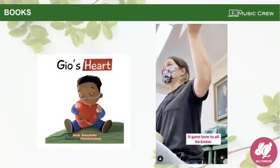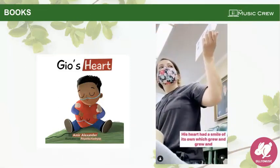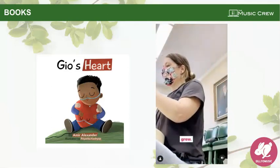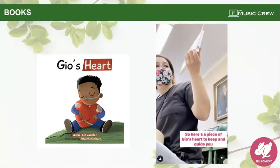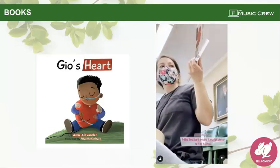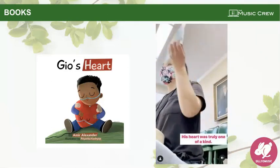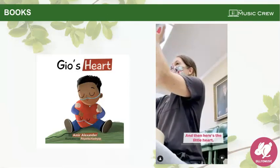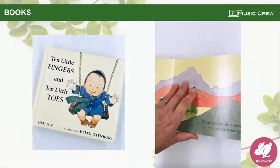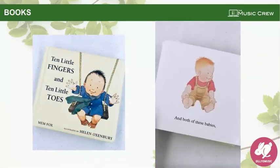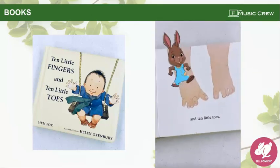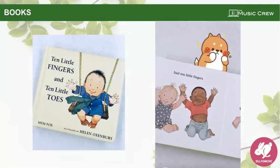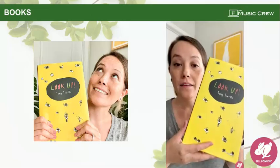Here are examples of me using the books — just a heads up, Ten Little Fingers and Ten Little Toes is playing at twice the normal speed so it's a little fast. 'Geo's heart was special, it gave love to all he knew. His heart had a smile of its own which grew and grew and grew.' 'There was one little baby who was born far away, and another who was born from the very next day, and both of these babies, as everyone knows, had ten little fingers and ten little toes.' And here is Look Up by Jung Jin-ho.